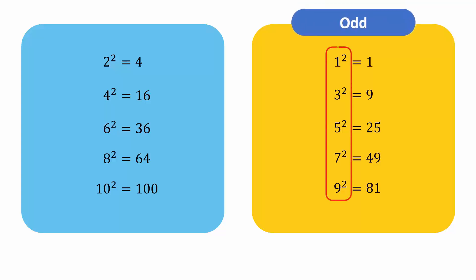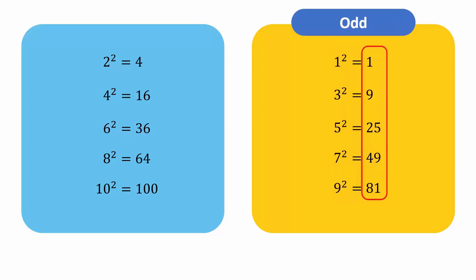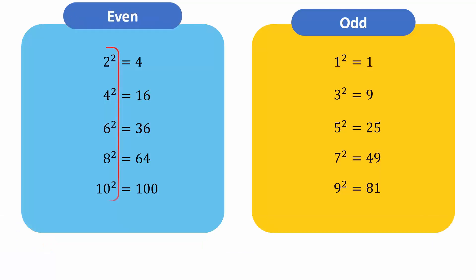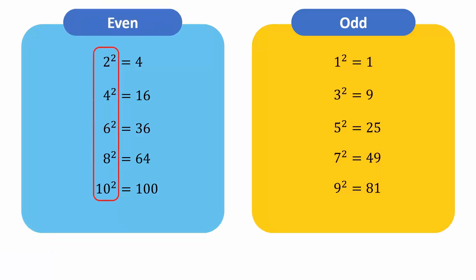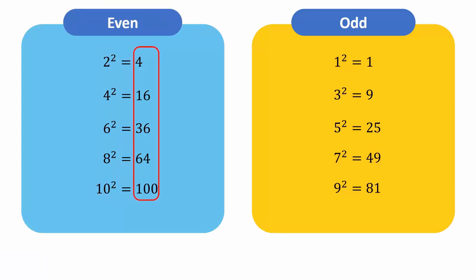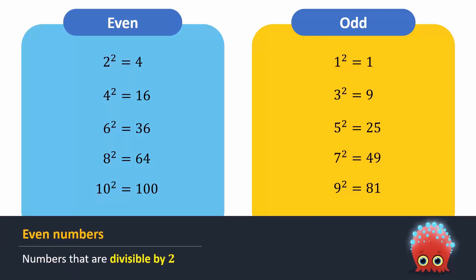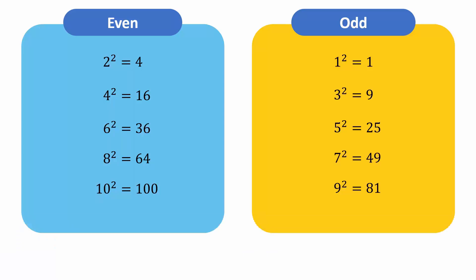The column on the right lists odd numbers and their perfect squares. Recall that odd numbers are numbers that are not divisible by two. The column on the left lists even numbers and their perfect squares. Even numbers are numbers that are divisible by two. Each even number in the left column has an even perfect square, while each odd number in the right column has an odd perfect square.